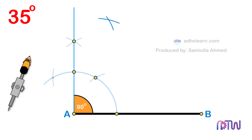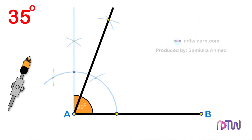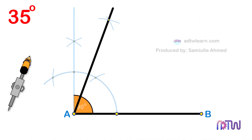After this, draw a line passing through this point from endpoint A of the line segment. This line is inclined at the required 70 degree angle.